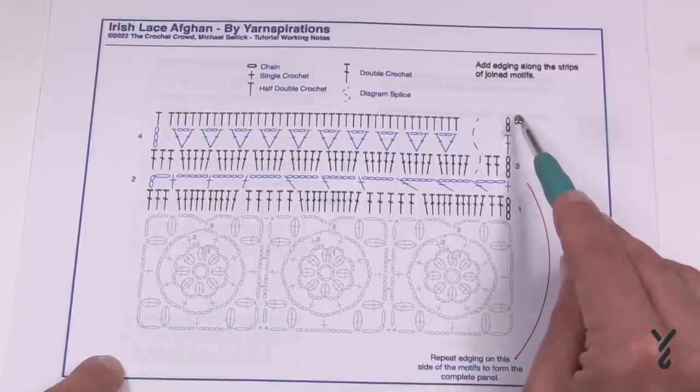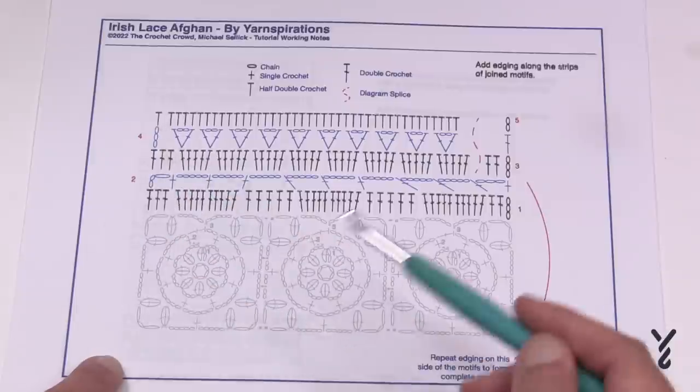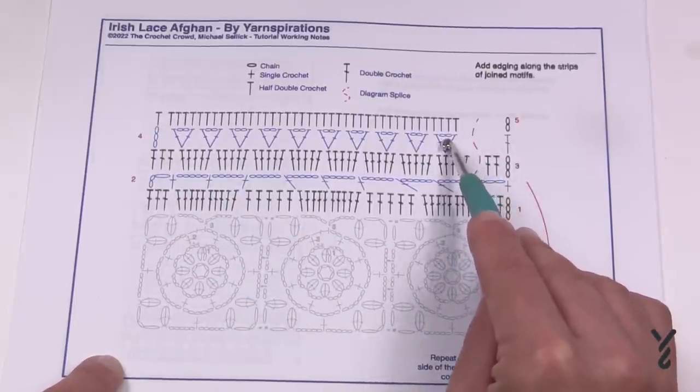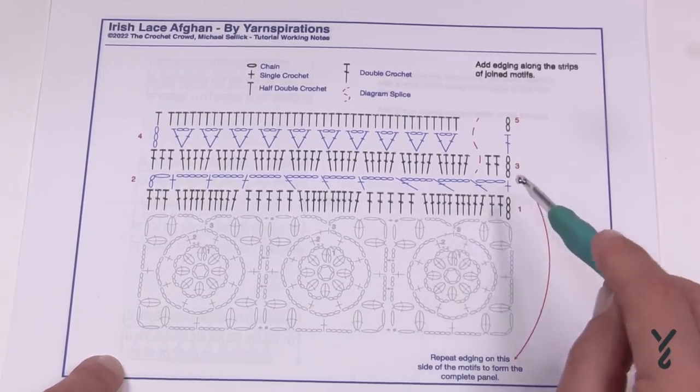Finally row number five is chain up two which equals a half double crochet. Then you'll put in a half double crochet into each one of the double crochets and two half double crochets into each of the chain two spaces and so that will give you a nice flat look.